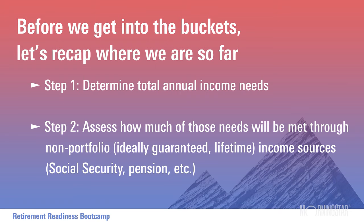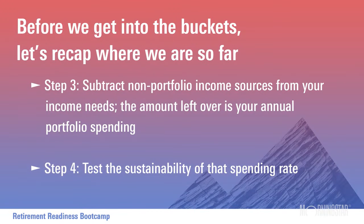Obviously if you're very close to retirement this is a lot easier than if retirement is further off. The next step is to assess how much of your spending needs will come from non-portfolio sources of income — Social Security, perhaps pensions, annuity income, part-time work, or rental properties. You subtract those non-portfolio sources from your spending needs, and the amount left is what your portfolio will need to supply. You need to stress test that number to make sure it's sustainable.